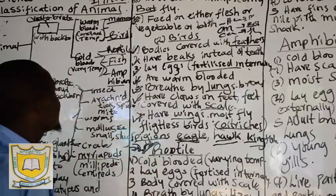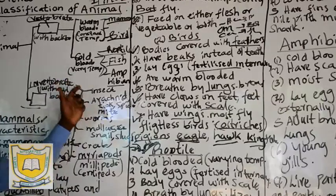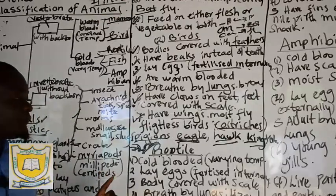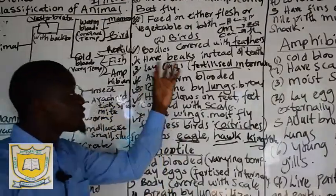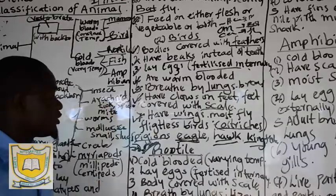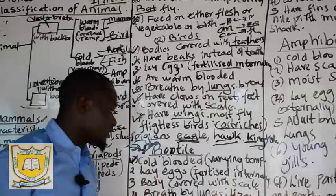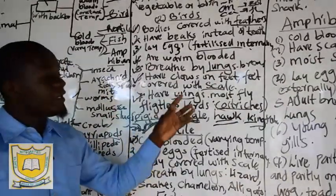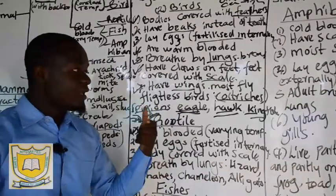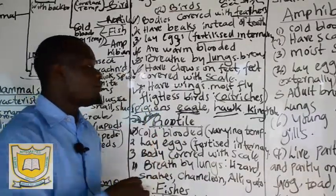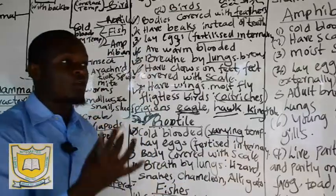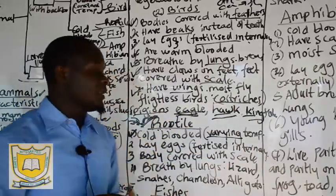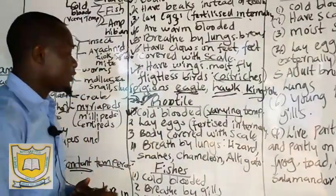Now we move to cold-blooded animals. Under cold-blooded we are going to discuss reptiles. Characteristic number one: all reptiles are cold-blooded, meaning they have varying body temperature. When they move from water to land or from land back to water, the body temperature changes. Characteristic number two: reptiles lay eggs, and these eggs are fertilized internally — they have internal fertilization.